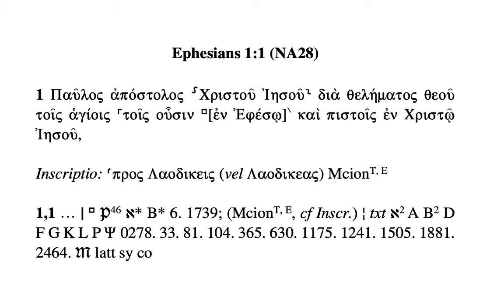On the final line, you get 2464. And then the majority, M, which means the great majority of Greek witnesses altogether have 'en Ephesō' or 'en Ephesus.'